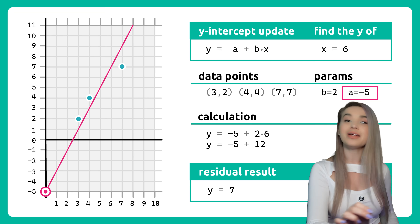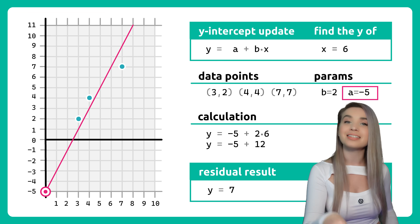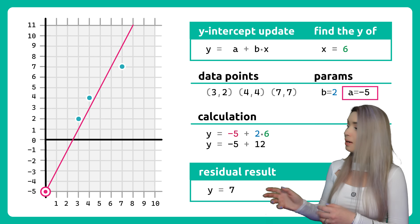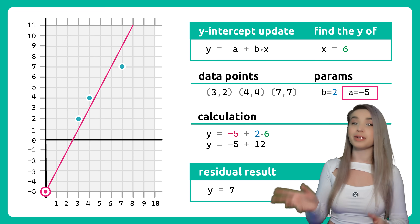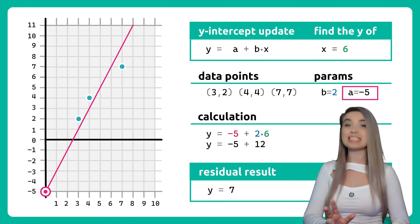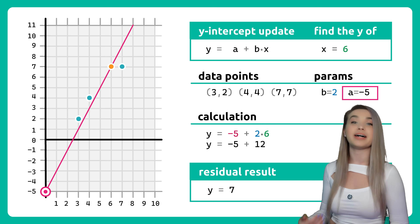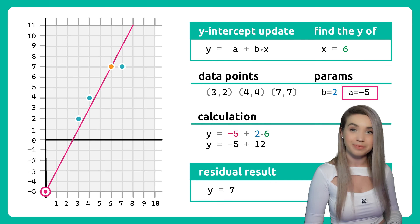if we try to predict the y-location of x equals 6 once again, we no longer get the y of 8. But instead, we get minus 5 plus 2 times 6, which gives us the y of 7.